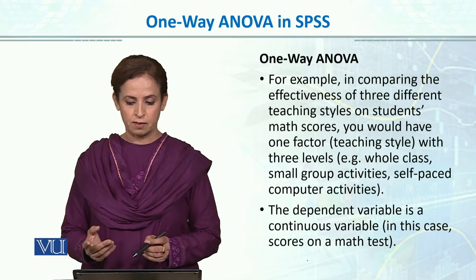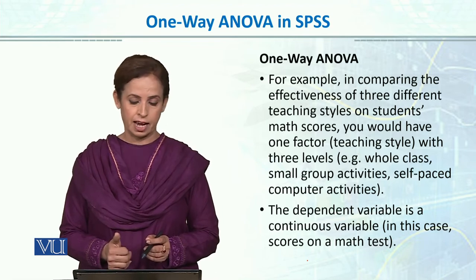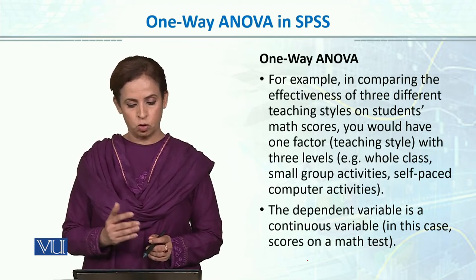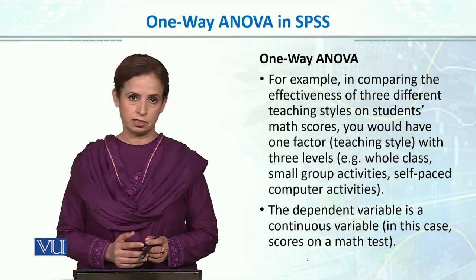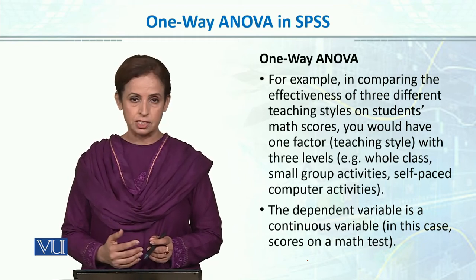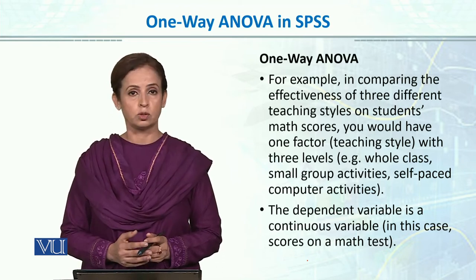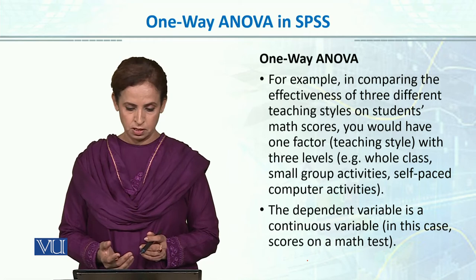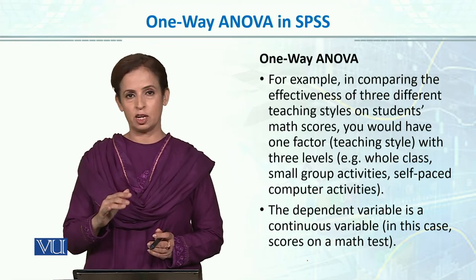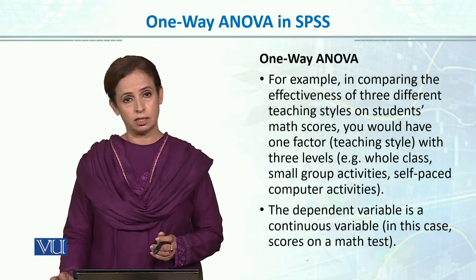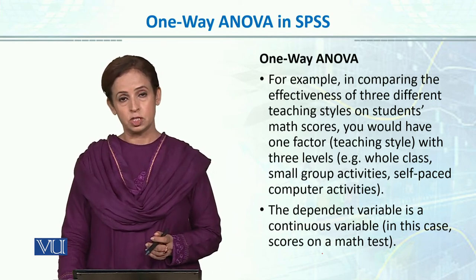For example, in comparing the effectiveness of three different teaching styles on students' math scores, you would have one factor — teaching style — with three levels: first, whole class; second, small group activity; and third, self-paced computer activity. The dependent variable is the scores on a math test, which is a continuous interval-scale variable.